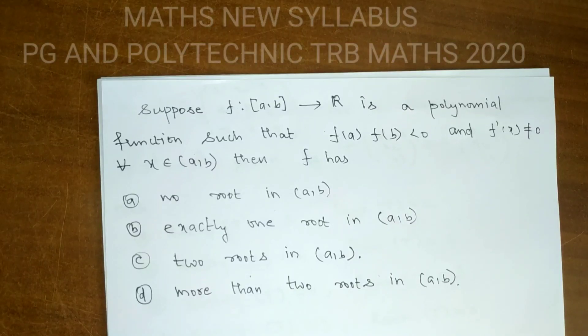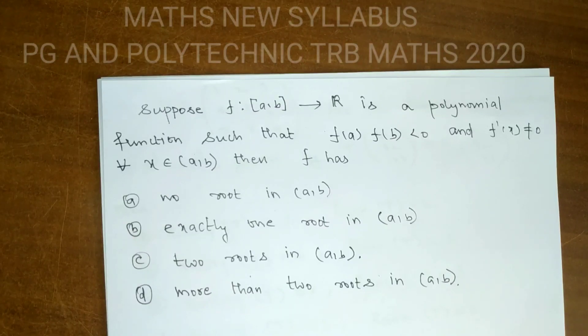It is a simple question. Let us look at it carefully. We have one polynomial function, f(a)·f(b) < 0, and the derivative f'(x) is always not equal to zero for any values of x.